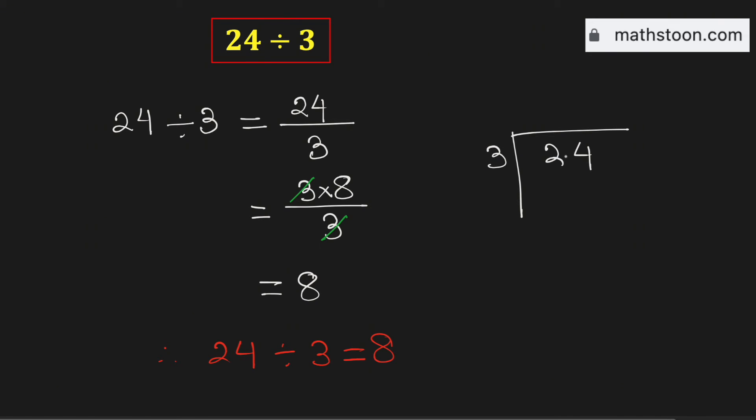We know that 3 goes into 24 by 8 times, and we have 24 here. Now subtract this we will get 0.